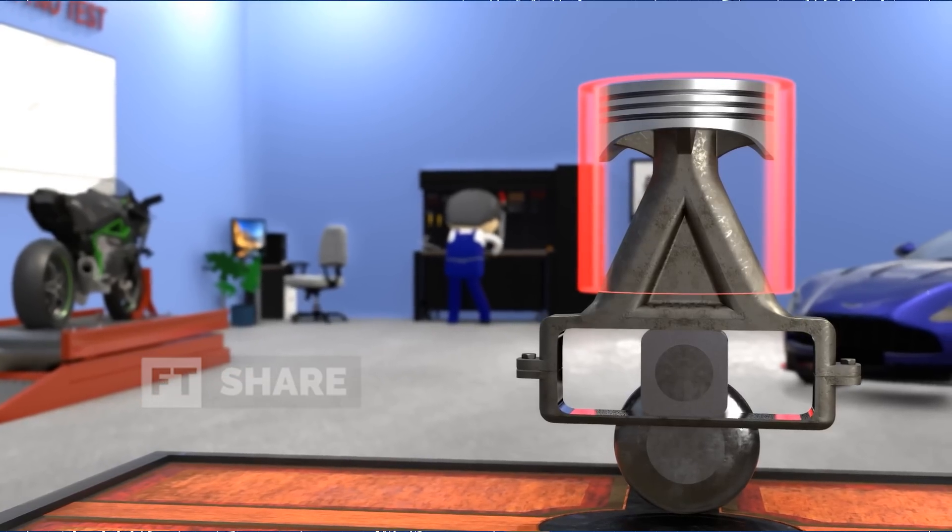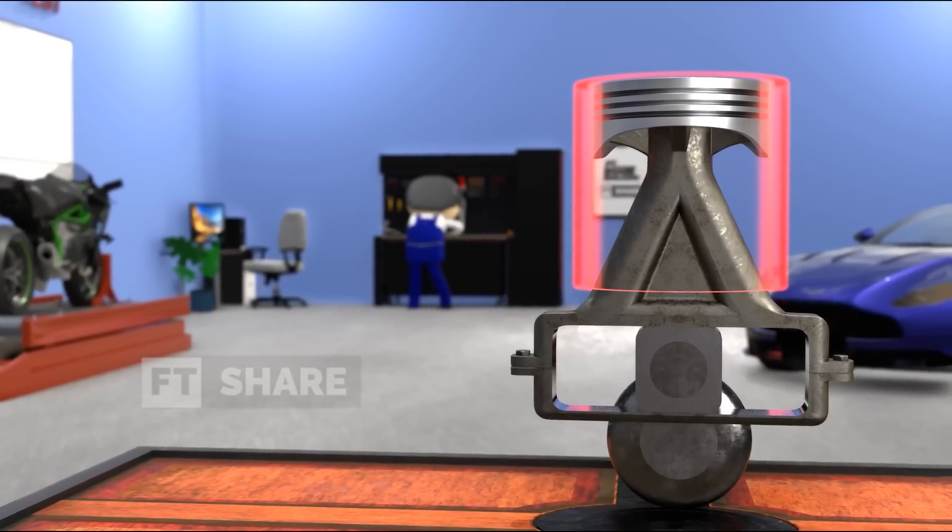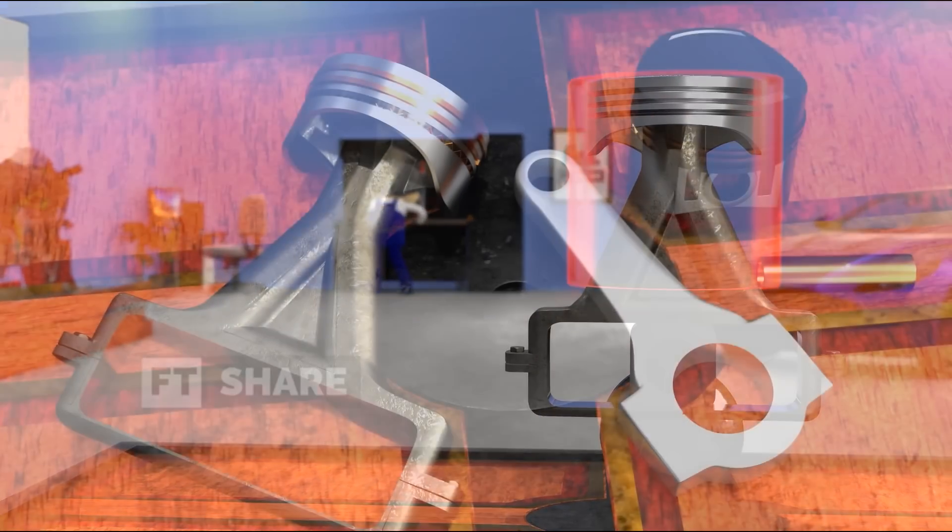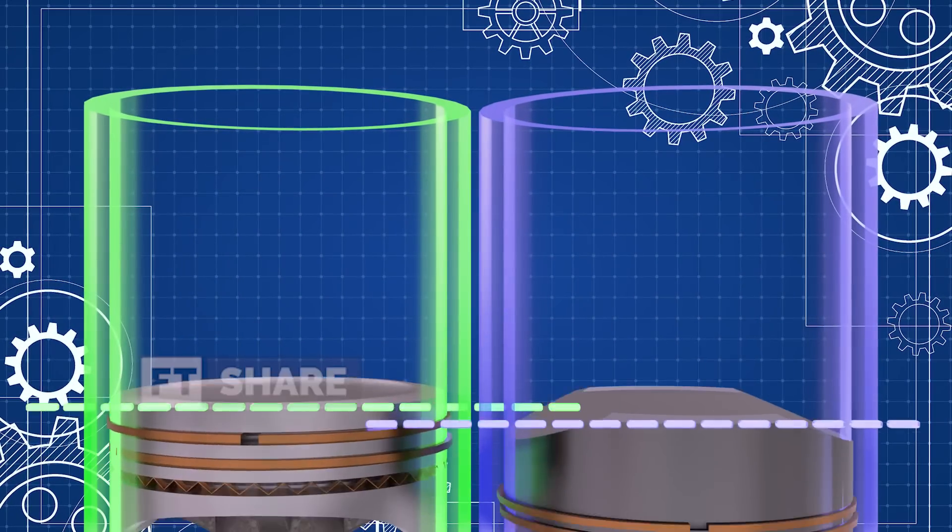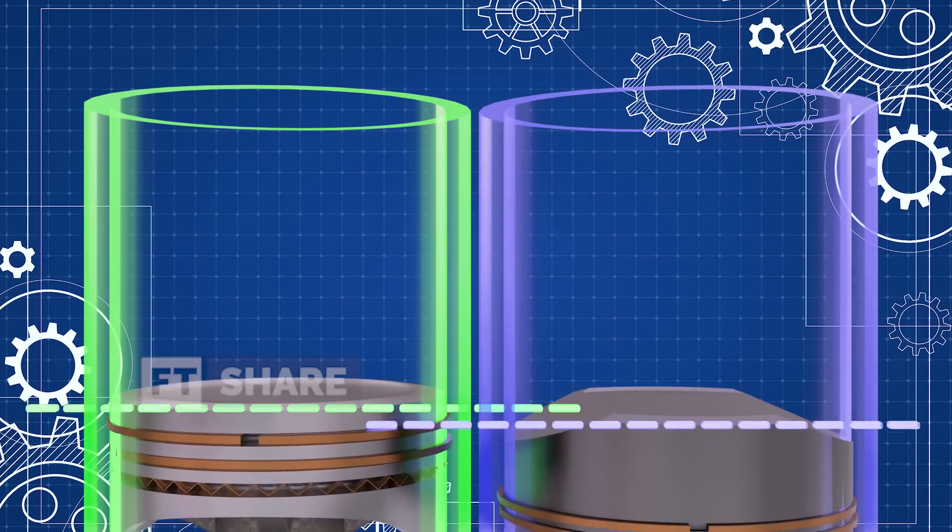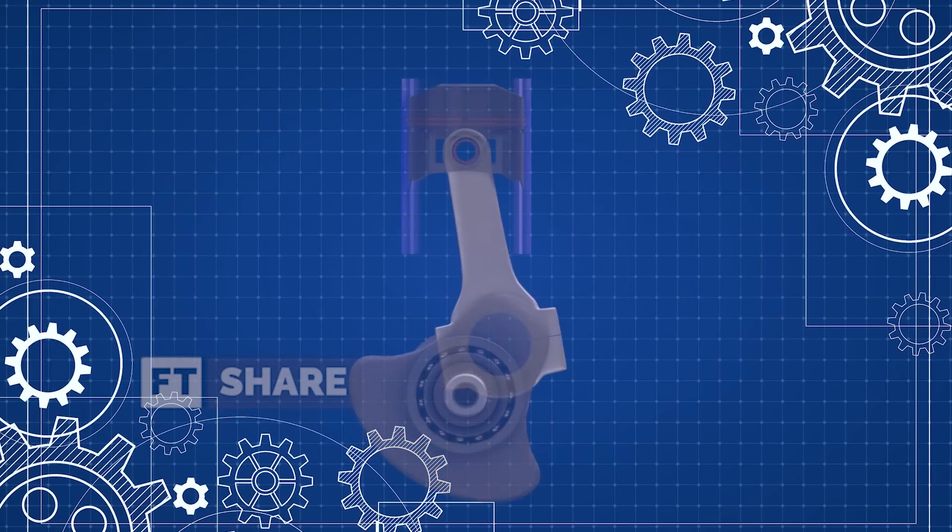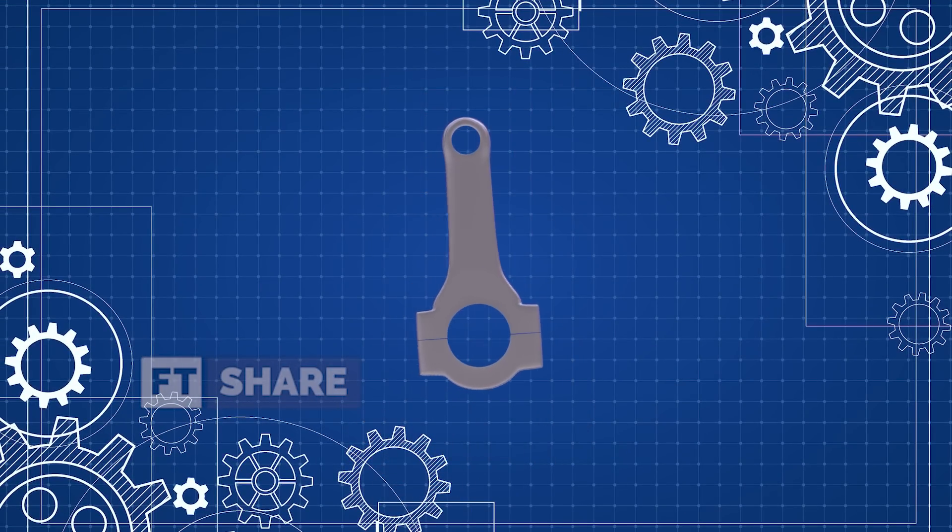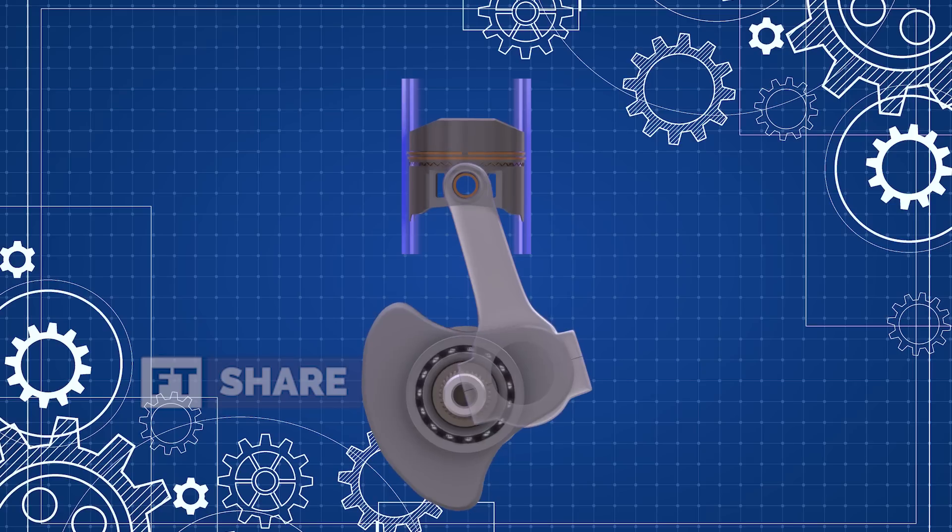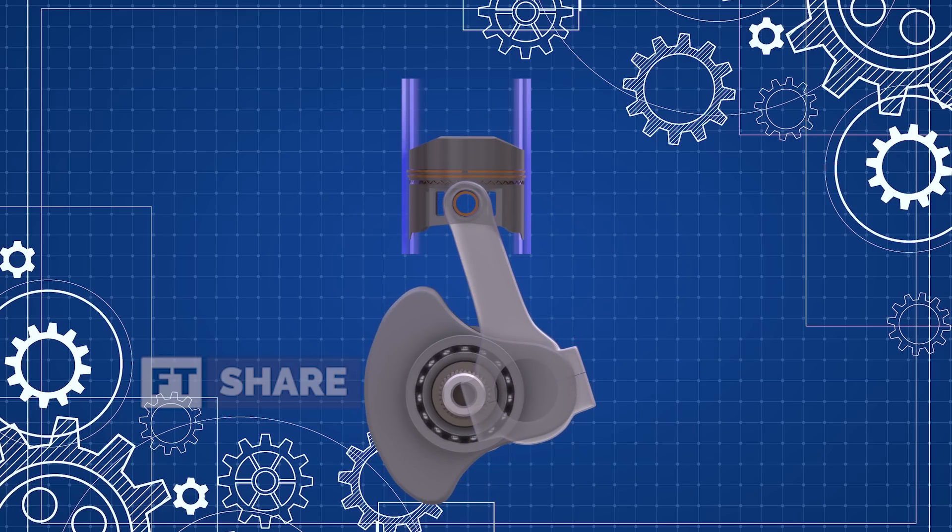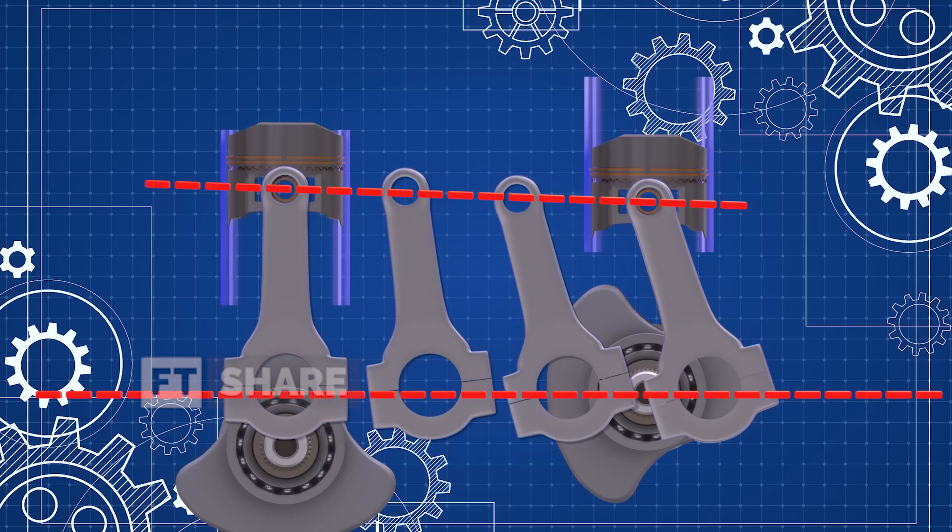Now, some might wonder, how can a slightly different assembly structure like this engine provide extra combustion duration? It's achievable by altering the piston's motion resulting from the change in the connecting rod. Now, let's take a look at how the connecting rod in a conventional engine plays its role. Specifically, when the connecting rod changes its position from upright to inclined, or when it pulls the piston from 0 to 90 degrees.